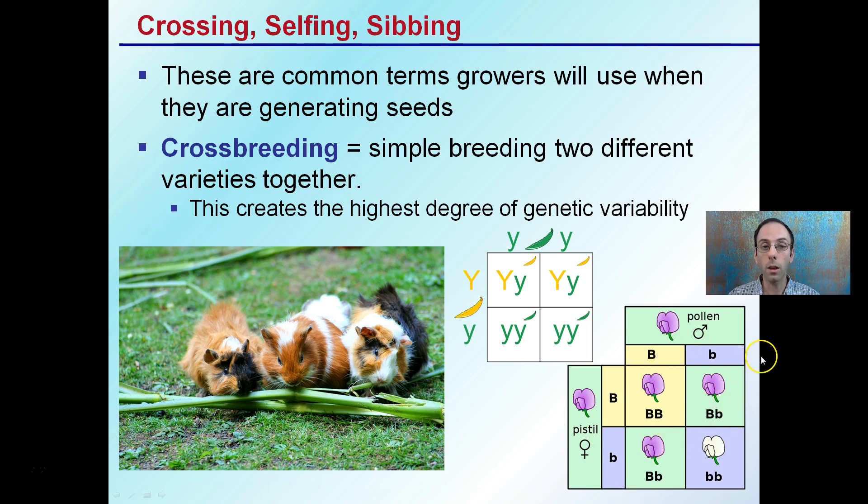The heterozygotes create a little more variability, as we see here. So again, in terms of phenotype and genotype, crossbreeding creates the highest degree of variability.